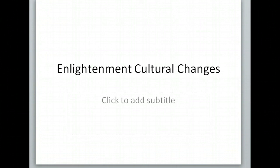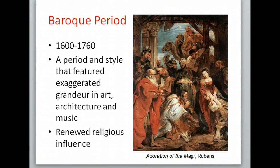In the Enlightenment, we have some cultural changes. We have the development of a new style of art called Baroque, or the Baroque period. It's from approximately 1600 to 1760. It's the period and style featuring exaggerated grandeur in art, architecture, and music. Think about how you can use abbreviations when writing this down, like A-R-C-H instead of architecture.